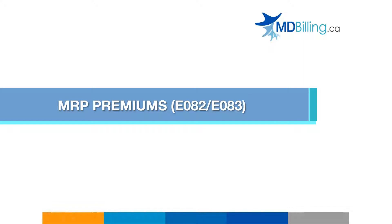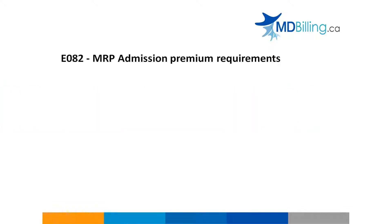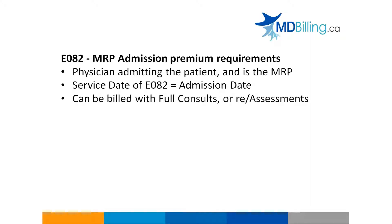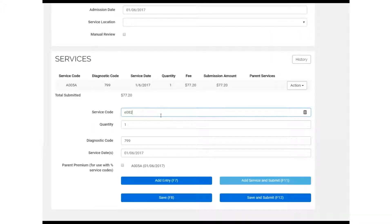There are two premium codes for the most responsible physicians. The first one is E082, MRP Premium for Admission Assessment. It is eligible to the admitting physician who is the MRP and is payable only once per patient per admission. It can be added to general assessments, general reassessments, and consultation service codes, where the service date and the admission date for the patient fall on the same calendar date. E082 is a premium that bills at a rate of 30% of the admission assessment service, the parent code.